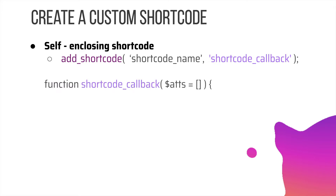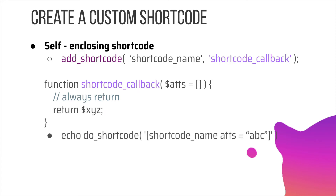You create a function called shortcode_callback — it accepts attributes, which you can pass if you want. You need to ensure you always return something from the shortcode because we're going to echo it out. Finally, if you want to display the shortcode programmatically, use echo do_shortcode — that's a WordPress function — and wrap the shortcode name inside square brackets. If you want to pass any attributes, you can include those as well. This is a self-closing shortcode.